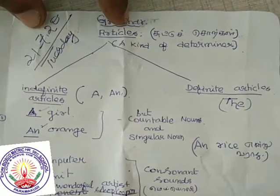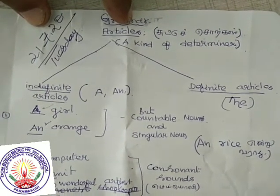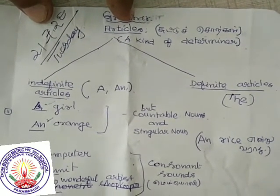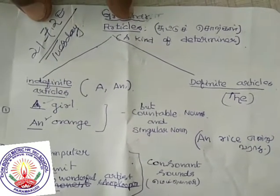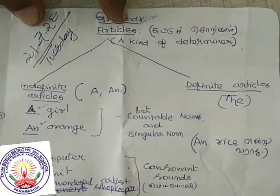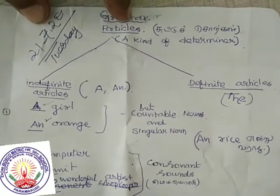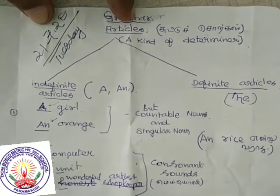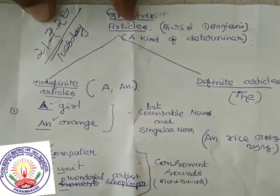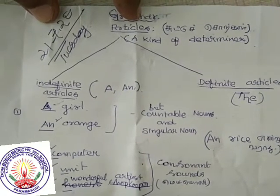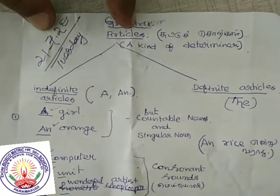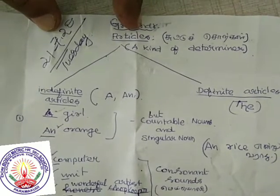Articles are one kind of determiner. Articles are divided into indefinite articles and definite articles. Indefinite articles means 'a' and 'an'. Definite articles means 'the'. Now we are going to see how to use 'a' and 'an'.